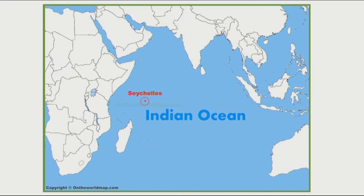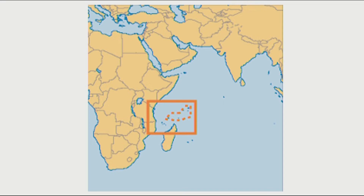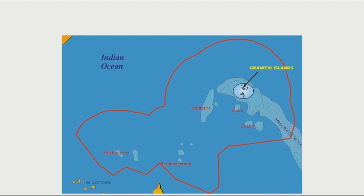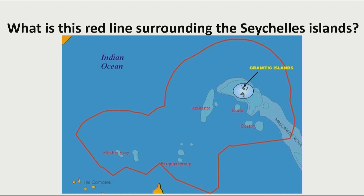Here we have a map showing the Indian Ocean and we have Seychelles on the map. Taking a closer look, we can see the different islands of the Seychelles. Those little spots are representing the different islands. And around those different islands, we have a red line. So, what is this red line surrounding the Seychelles islands?